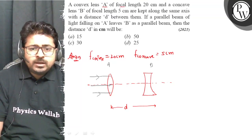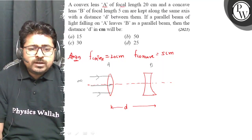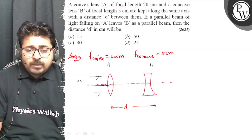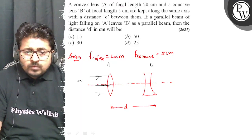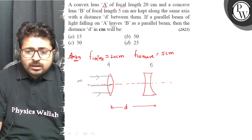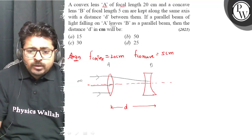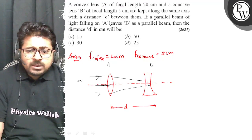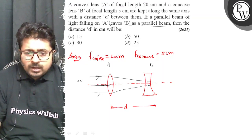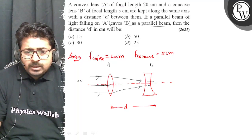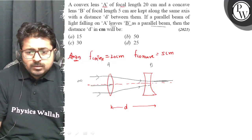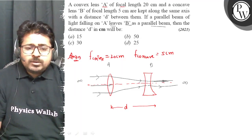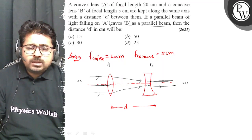The light rays are coming from infinity — a parallel beam of light from infinity falls on A and leaves B as a parallel beam. The outgoing rays from B are also parallel, meaning they converge to infinity.